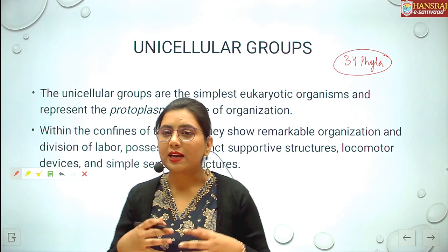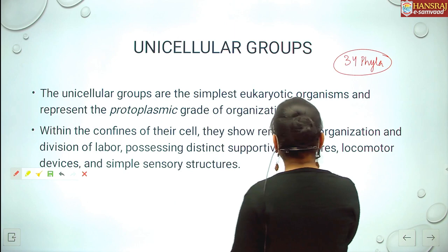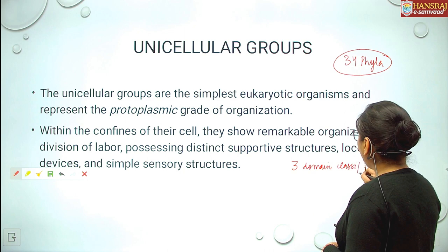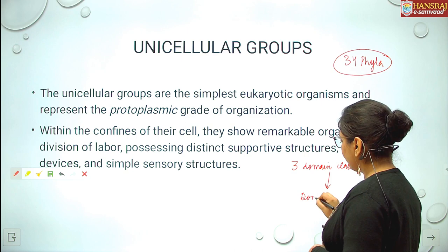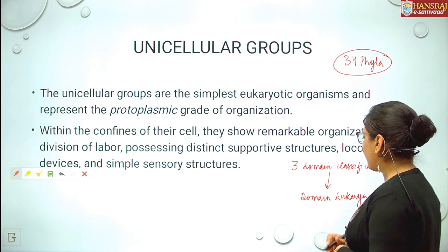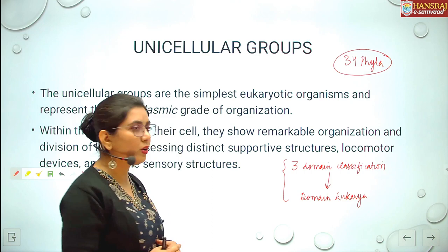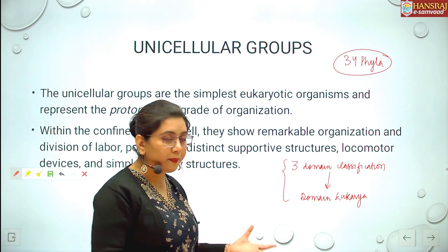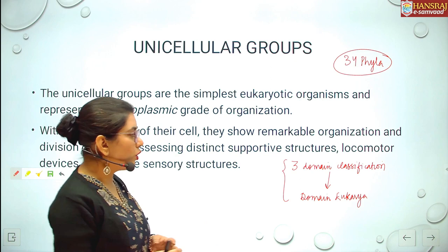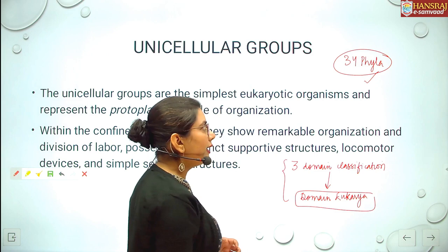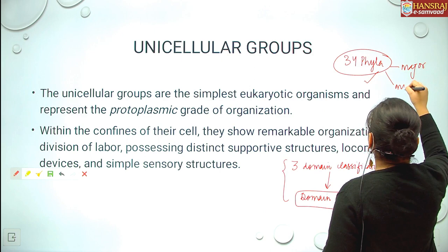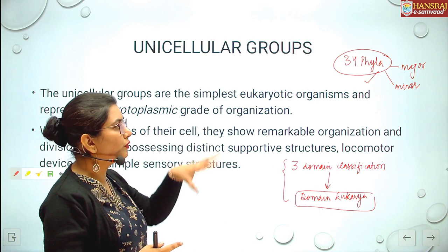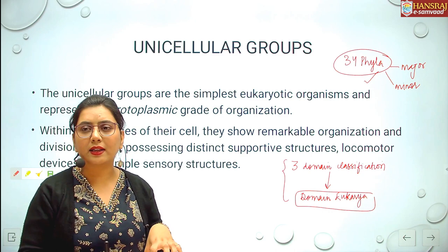When we look at animal classification today, we follow the three domain classification. Animals fall under the domain Eukarya, which includes all eukaryotic organisms. This classification was given not only to classify organisms based on morphology, anatomy, and development, but also their evolutionary history — phylogeny. The animal world falls into domain Eukarya, which includes 34 phyla — some major and some minor. The minor phyla are lesser known with fewer species.